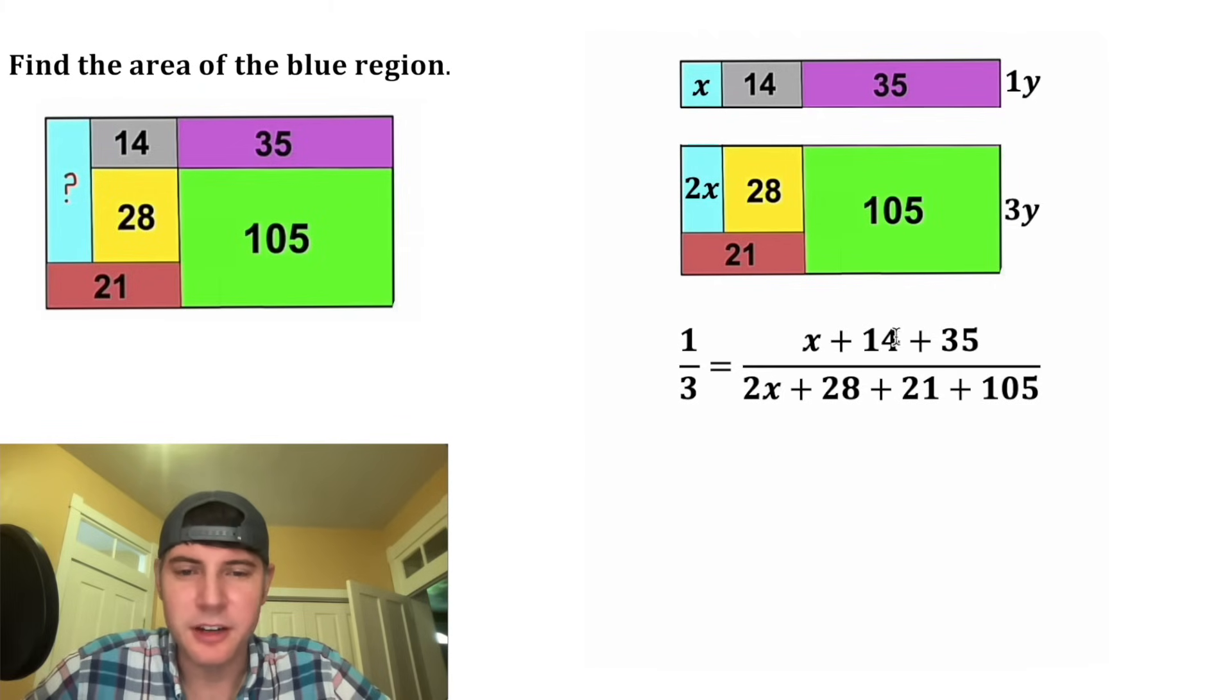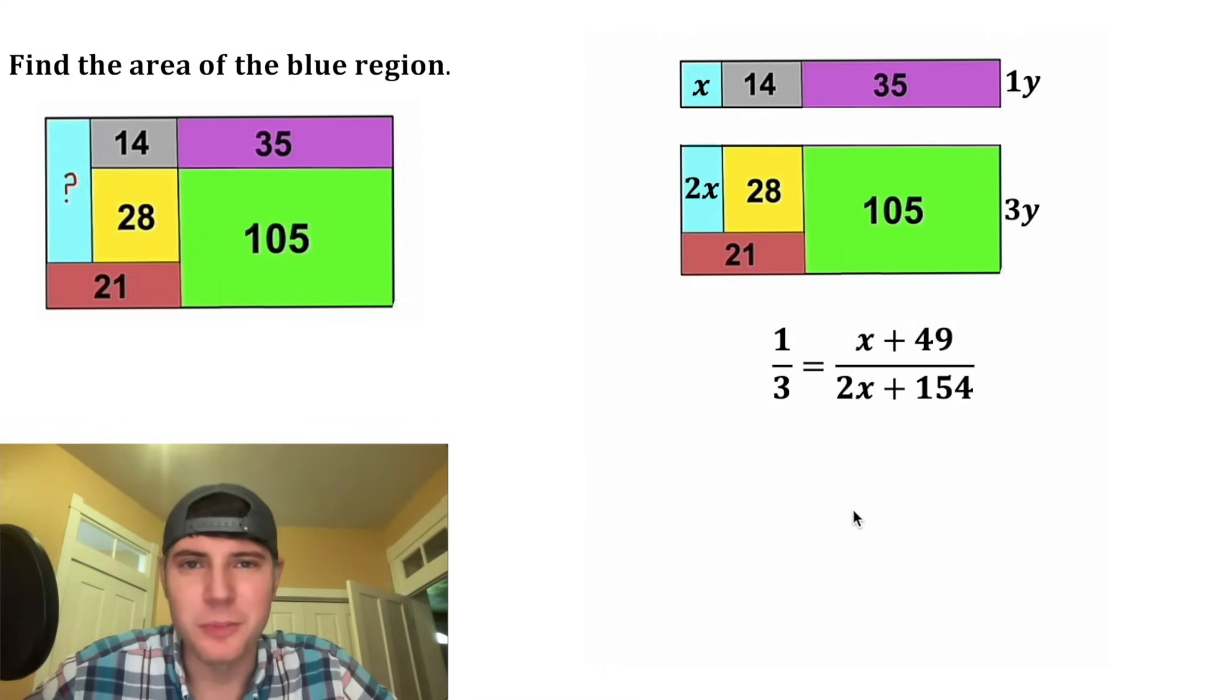Now let's clean this up. On top here, we can do 14 plus 35 to give us 49. And then on bottom, the 28 plus 21 is also 49. And then 49 plus 105 is 154. Next, we can cross-multiply.